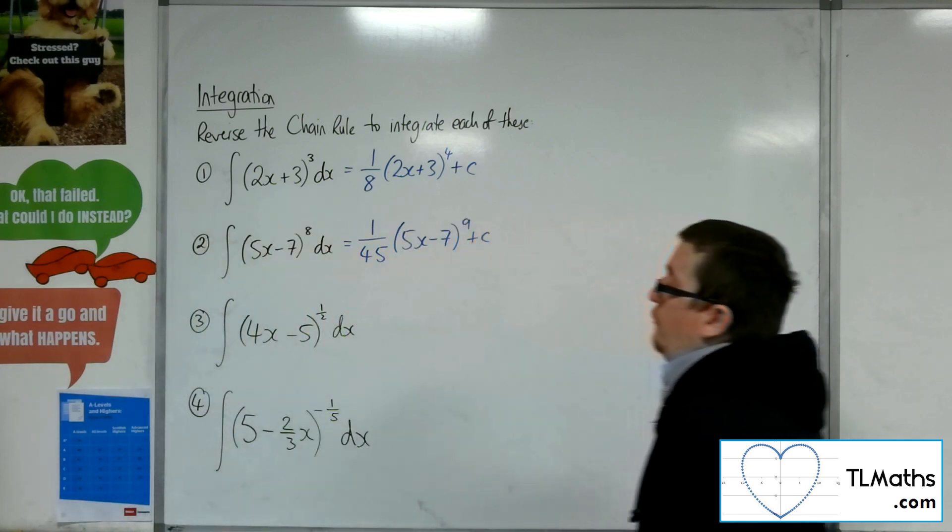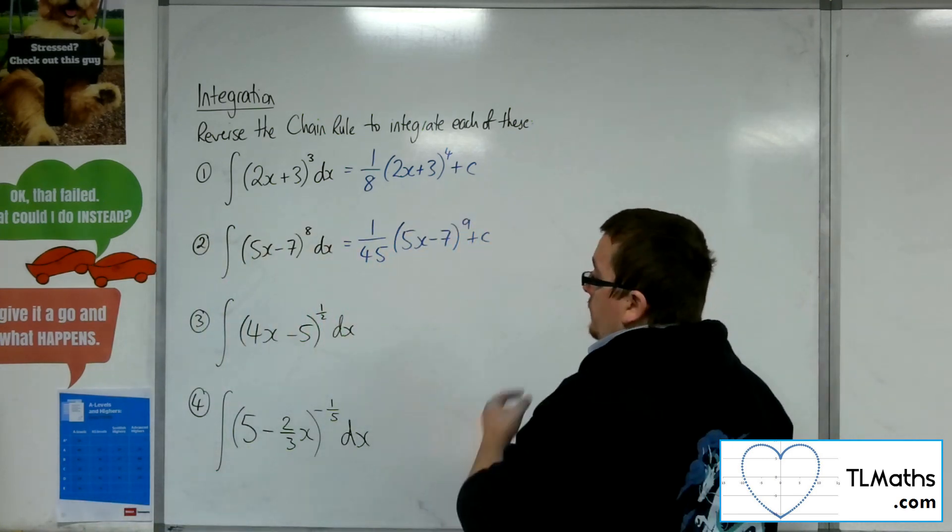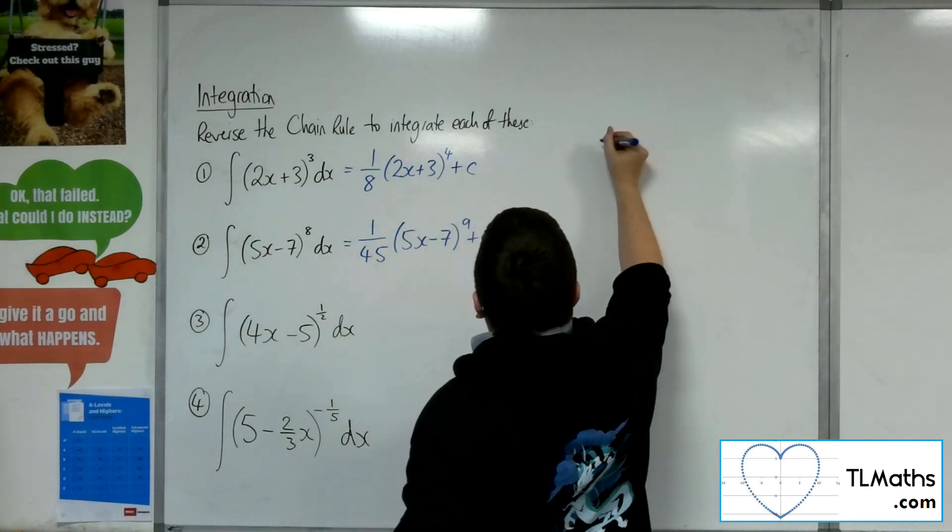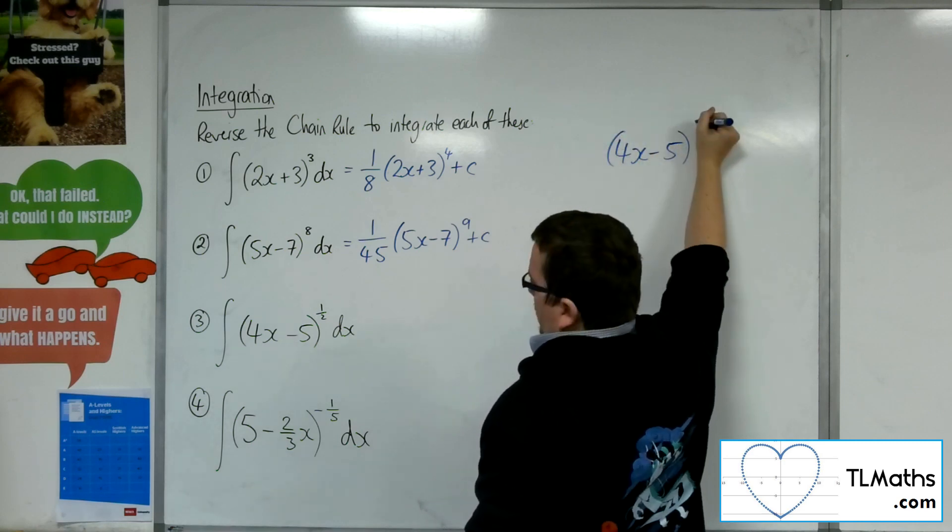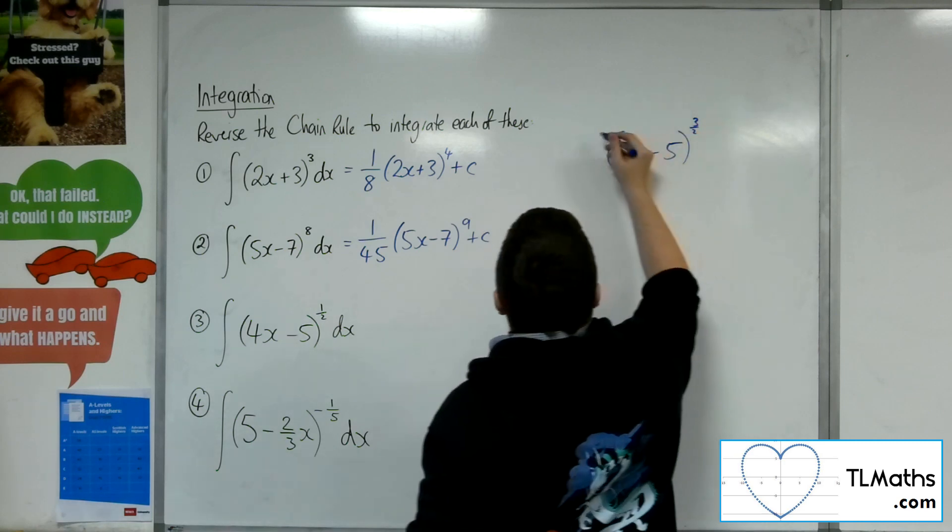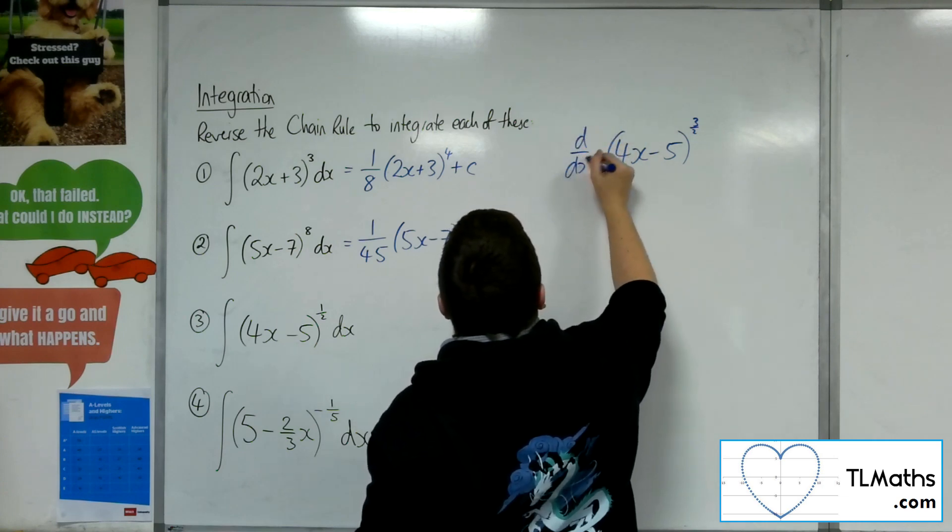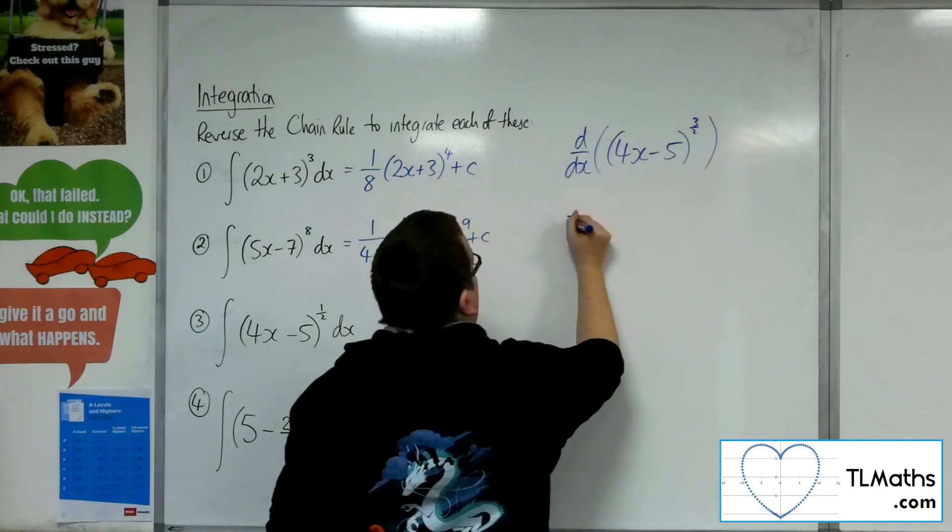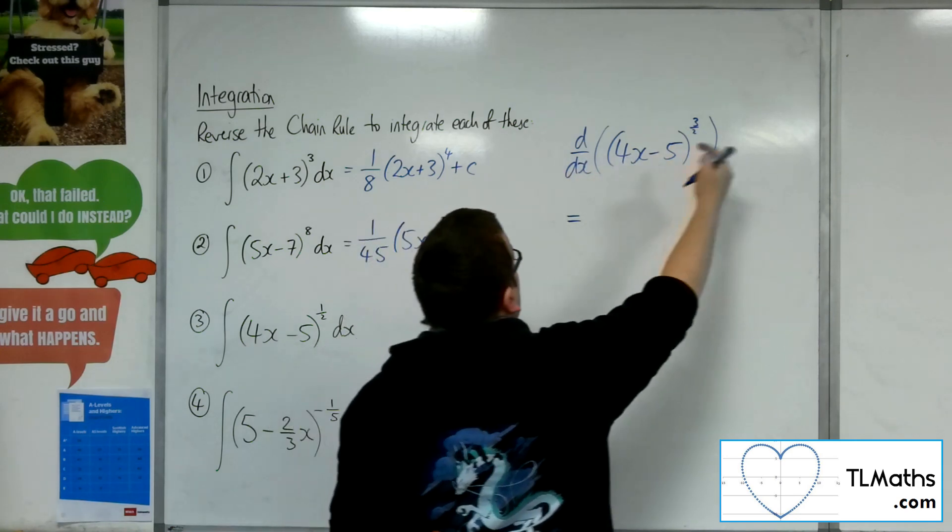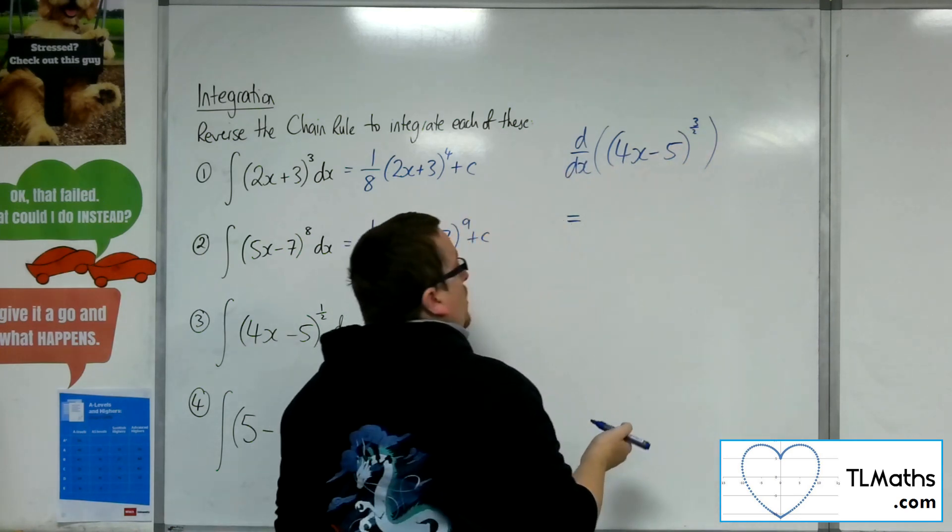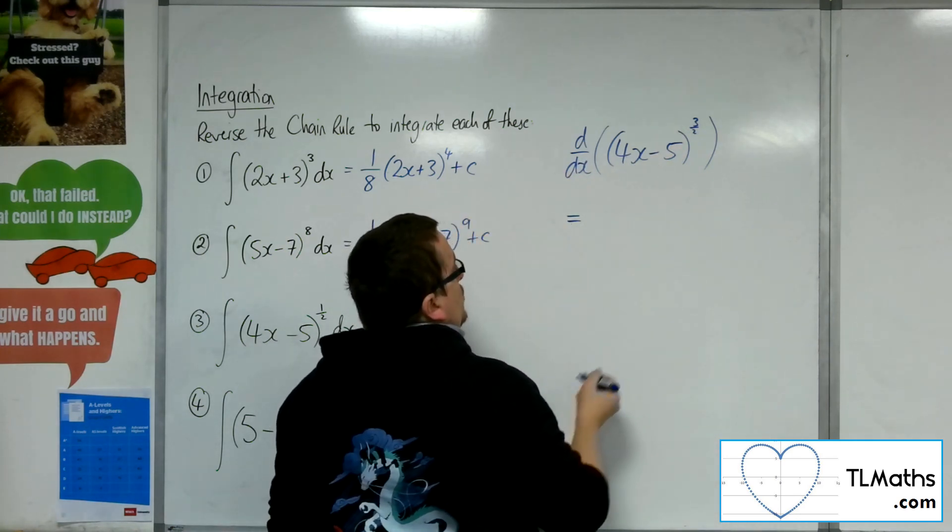Now number 3, we've got 4x minus 5 square rooted. So I know that I should be getting 4x minus 5 adding 1 to the power to get 3 halves. So I want to differentiate that to see what this coefficient would have to be. So I've got the 3 halves coming down and the 4 coming down as well. So that's 4 lots of 3 halves, which is 6.